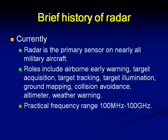The different roles played by early radars include early warning, target acquisition, target tracking, and target illumination. Moreover, they are also used for other applications like ground mapping, collision avoidance, measurement of height — known as altimeter — and also for weather warning, that is, to understand the moisture content, wind velocity, etc. of the weather, and to predict the weather condition in the coming 24 hours or one week ahead. Thereby, it could facilitate air travel to a great extent.